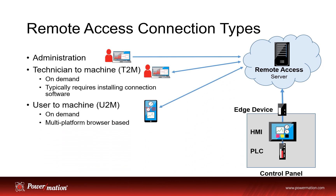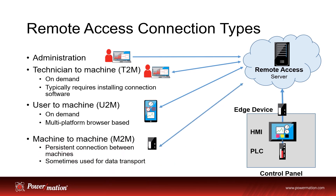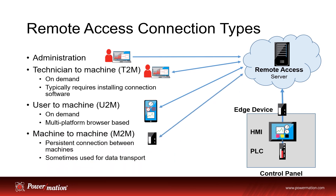A user-to-machine connection is on-demand and typically requires a web browser or some other app to view web pages, or remote desktop or virtual network connections. You can also do machine-to-machine, which is a persistent connection between two machines, sometimes used for data transport.